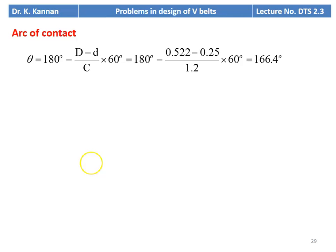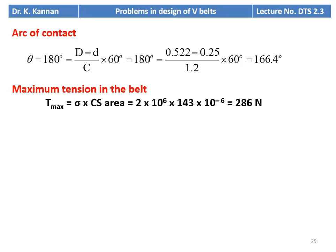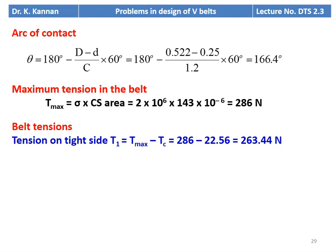Arc of contact θ = 180 − [(D − d)/C] × 60 = 180 − [(0.522 − 0.25)/1.2] × 60 = 166.4°. Maximum tension T_max = σ × A = 2 × 10⁶ × 143 × 10⁻⁶ = 286 N. Tension on the tight side T1 = T_max − Tc = 286 − 22.56 = 263.44 N.